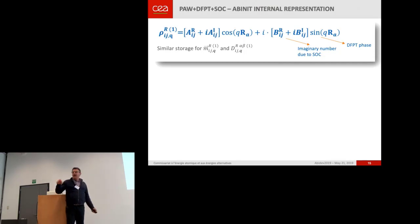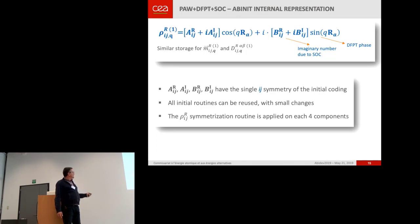The one I did 12 years ago. AIJR is AJIR. So doing this, I am able to reuse all my initial coding. But I have to call the routine twice or four times for each scalar. And the most complicated part was the symmetry of the RORIJ. And I was able to handle that because the symmetry of these terms is the same as the initial coding.